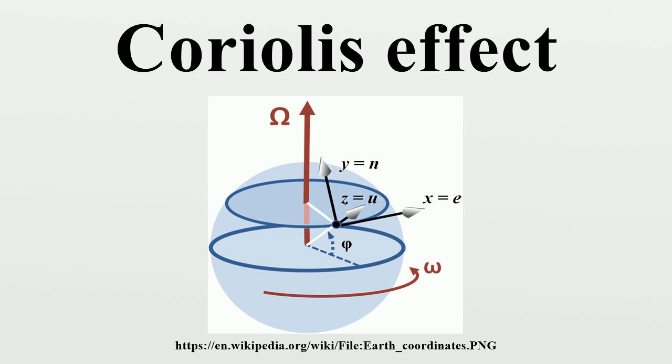If the velocity is straight outward from the axis, the acceleration is against the direction of local rotation. If the velocity is in the direction of local rotation, the acceleration is outward from the axis. If the velocity is against the direction of local rotation, the acceleration is inward to the axis.